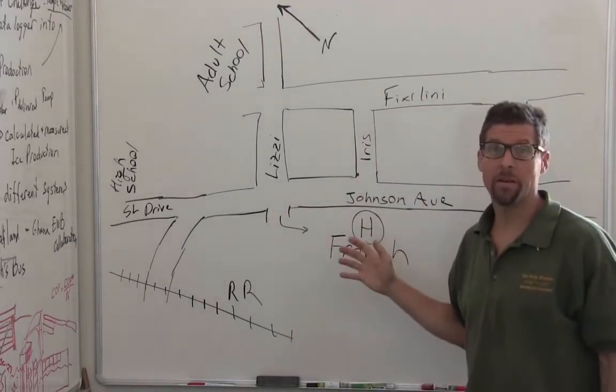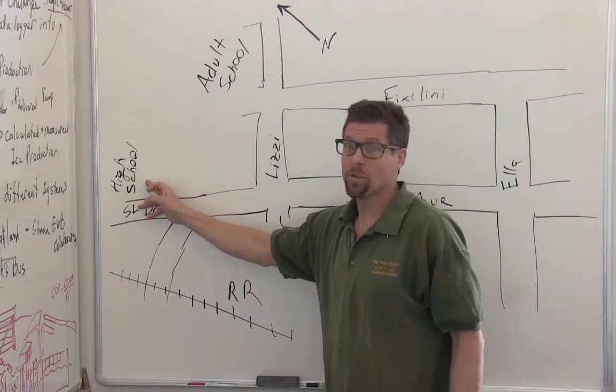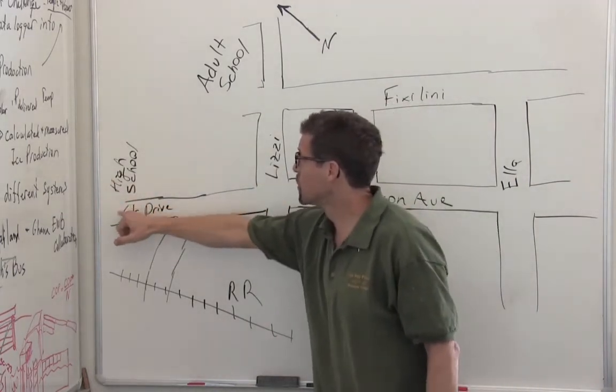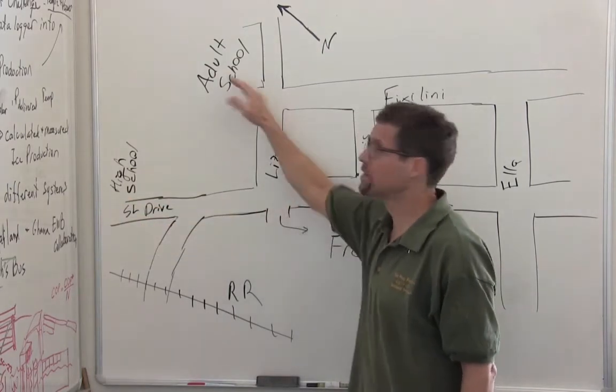This is our neighborhood. This is where we live. Here is the high school, San Luis Obispo High School and the adult school. Traffic should access these schools through San Luis Drive and Lizzie Street.